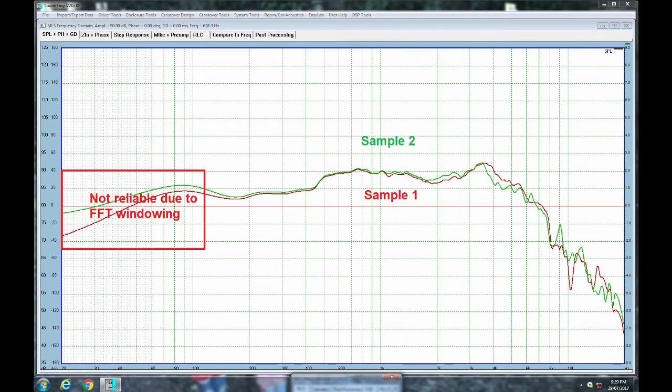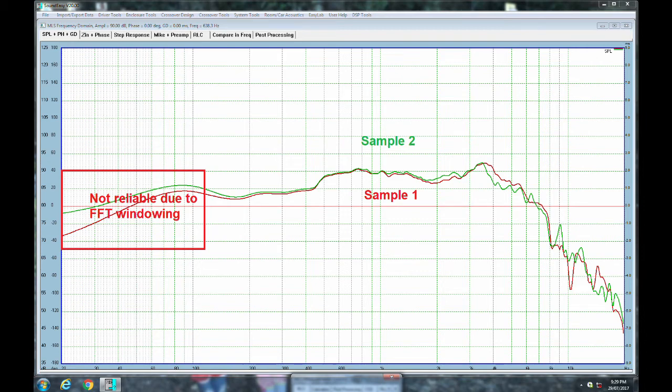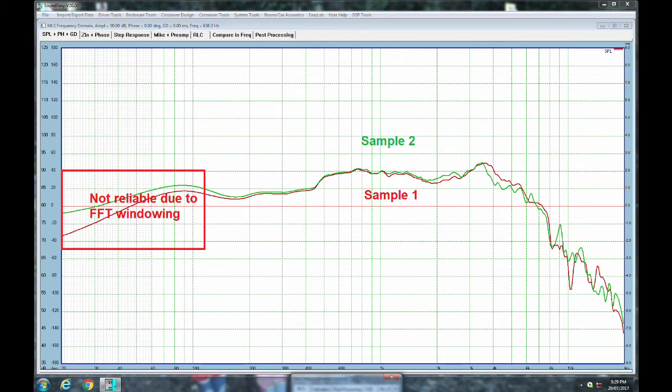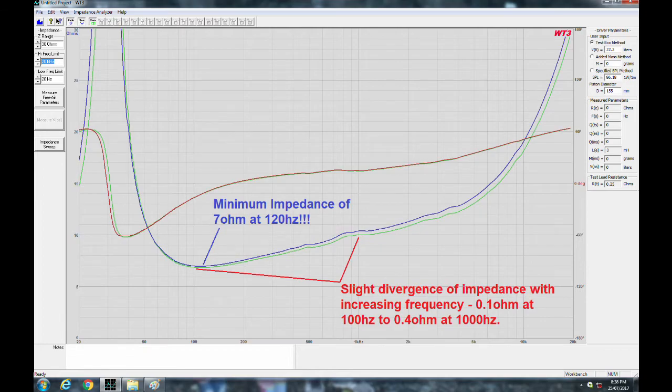and below the baffle step range which is happening at about 500 hertz you can see it drops down. We are looking at about 83 maybe as low as 82 as you get down around 150 hertz. 82, 83 dB is pretty good for a free field measurement like this and I am quite happy with the sensitivity considering this is an 8 ohm driver that can dig deep.